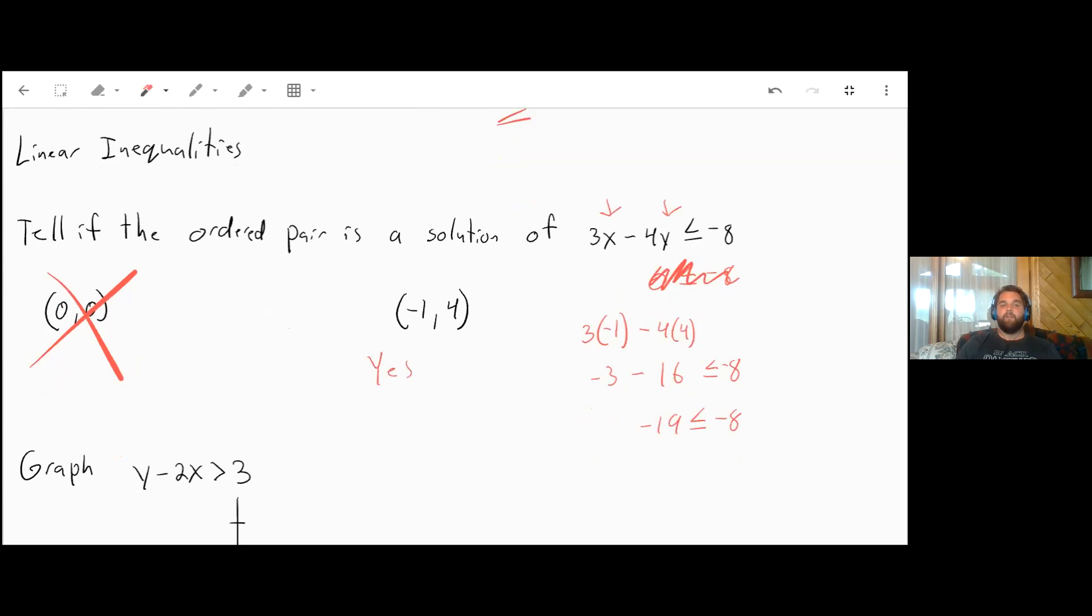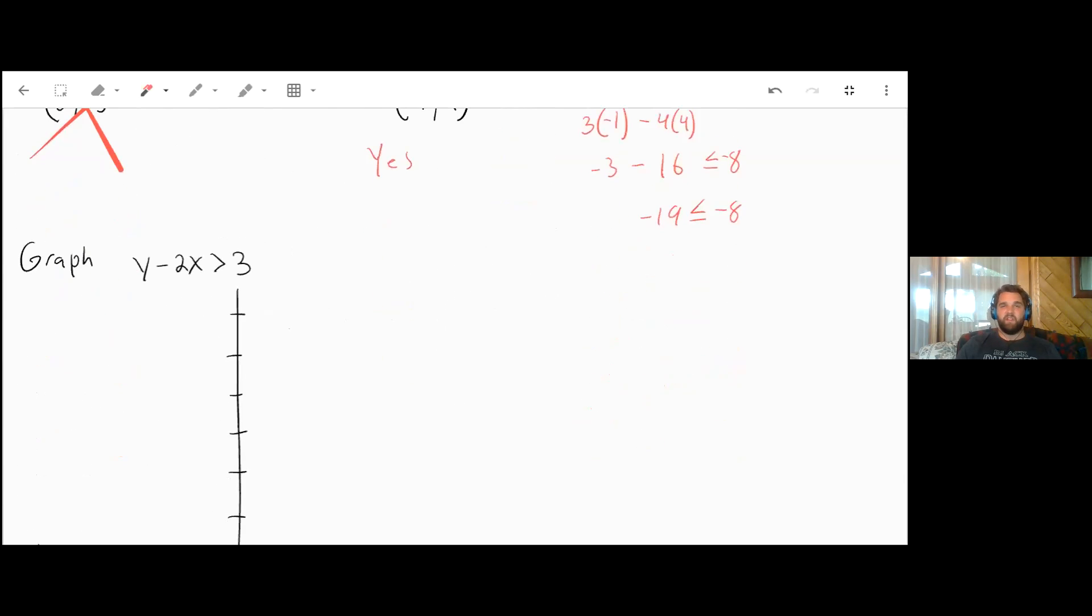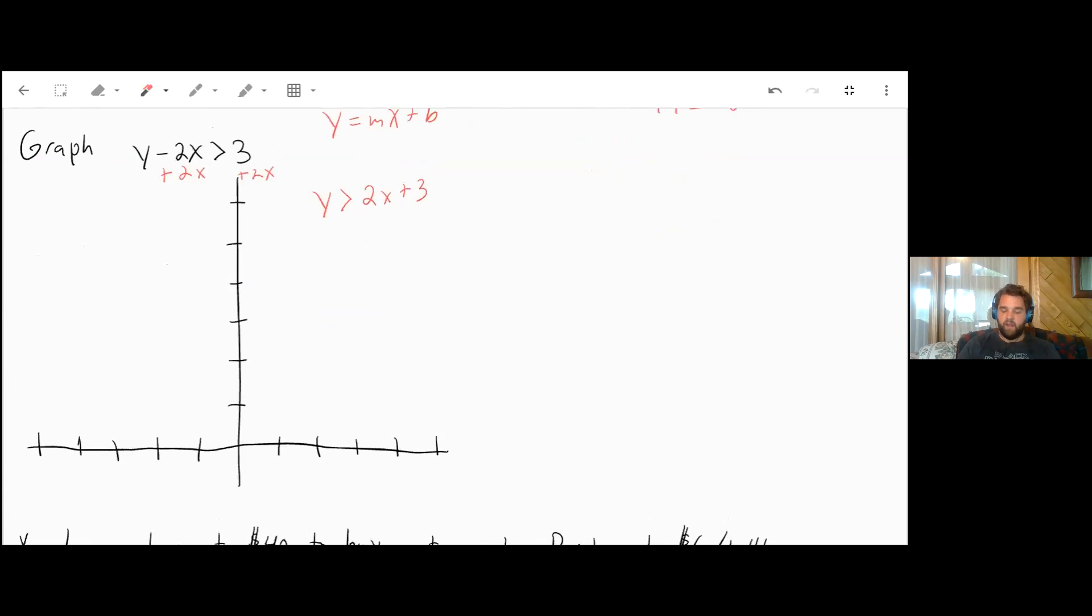To graph linear inequalities, it's similar to graphing a regular line. I'll get this into y = mx + b form by adding 2x to both sides. The inequality doesn't change, so it stays as y > 2x + 3. This gives us a y-intercept at 3 and a slope of 2/1. So up 2 over 1, there's our next point.